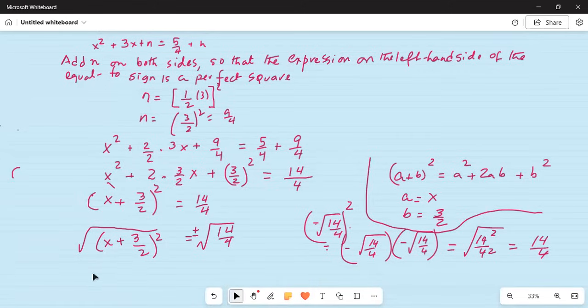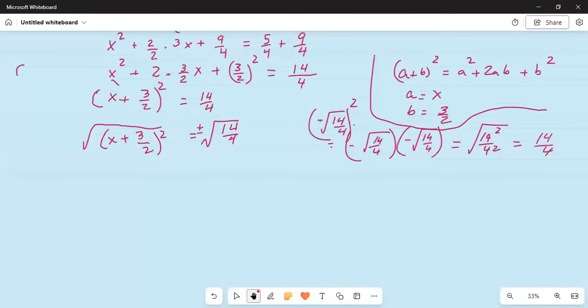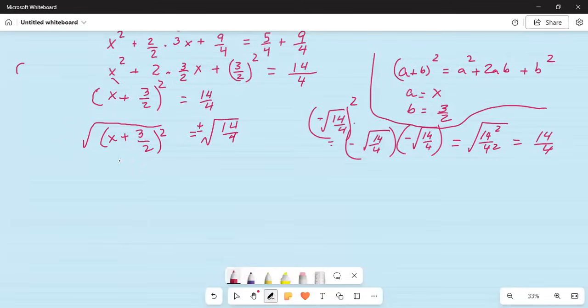Now I will put this a little bit up. So we get x plus 3 by 2 on the left hand side is equal to plus minus square root of 14, and we know 4 is 2 squared. So x plus 3 by 2 is equal to plus minus square root of 14 divided by 2.